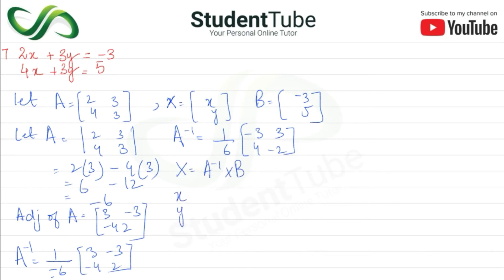X or Y is equal to 1 upon 6 or minus 3, 3, 4 or minus 2. Or B mein mein minus 3 or 5. Multiply karengi dhonoh ko.